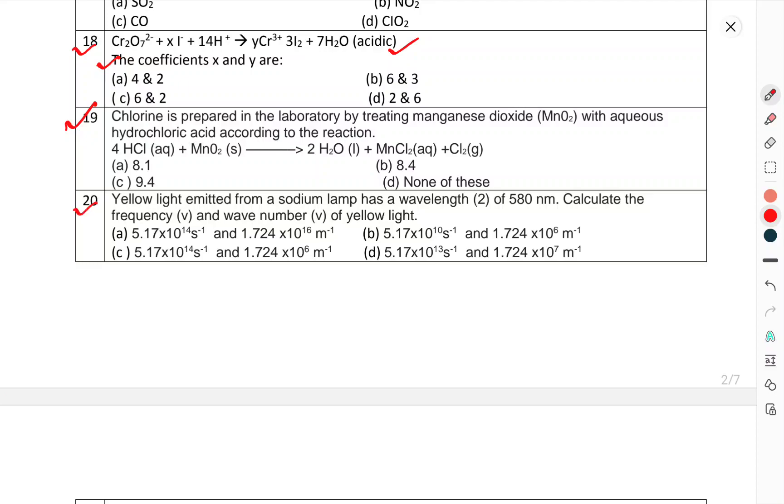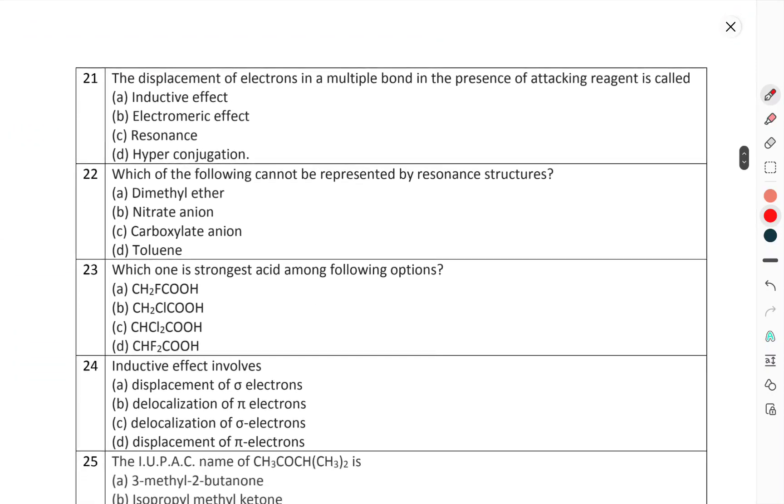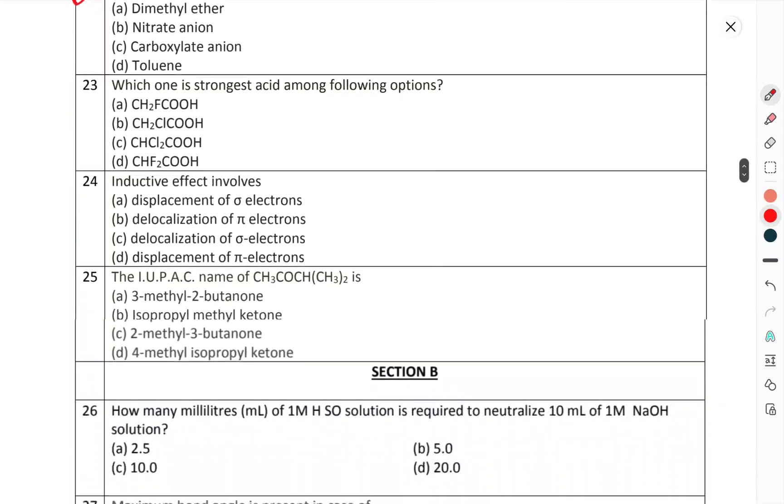Question number 20: Yellow light emitted from sodium lamp has a wavelength of 580 nanometer. Calculate the frequency and wave number of the yellow light. Question number 21: Displacement of electrons in a multiple bond in the presence of an attacking reagent is called.